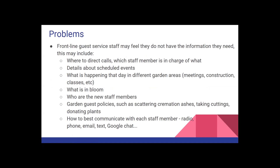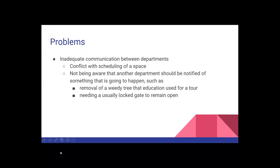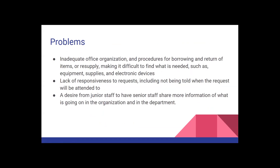One of the most common complaints is that a person did not know something they thought others should have told them about. It was both heartening and disturbing that this issue was widespread — not just at our garden. Guest services staff interact with most people who visit a garden. They might be part-time staff who don't regularly interact with other departments, and may not be aware of information other staff members live and breathe. They are asked many questions by guests and need to know answers or how to readily find information. Departments need to know what each other is doing, especially when it affects their activities. People need to know where to find things, how to get more when something runs out, and that their requests have been seen and will be fulfilled.